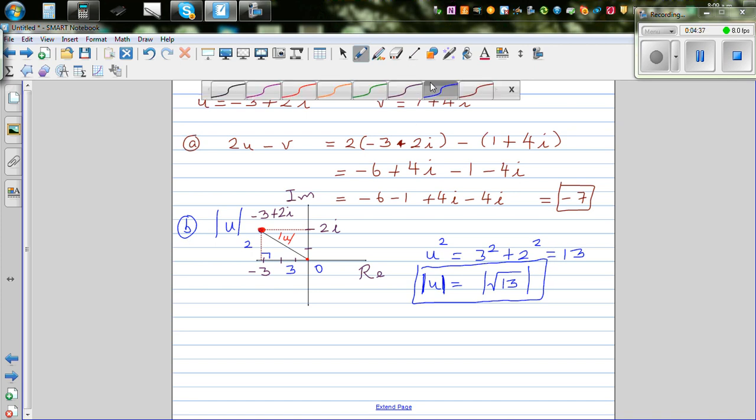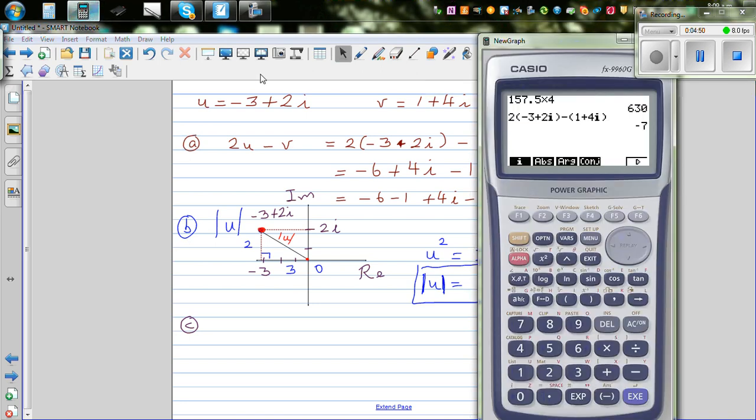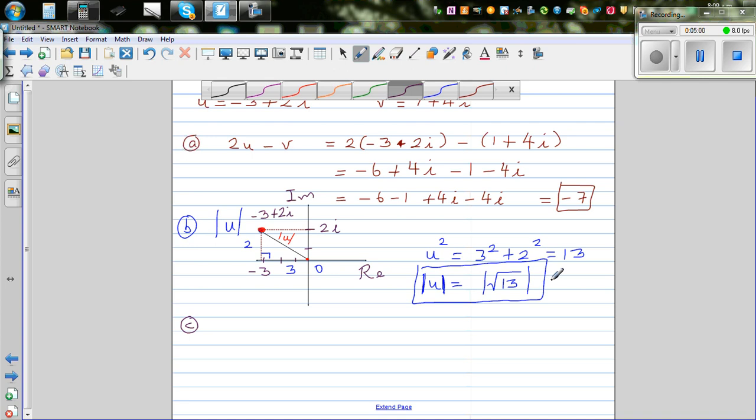The next is to find the argument. Let's find the exact value. Root 13 as a decimal value is 3.6, or 3.61. So how can we check this on a calculator?